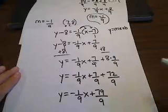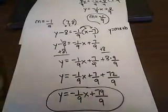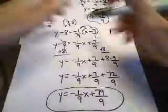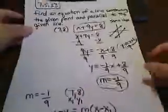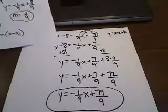So that would be the equation of the line that is containing this point 7,8, but parallel to the given line.